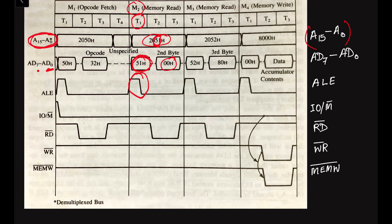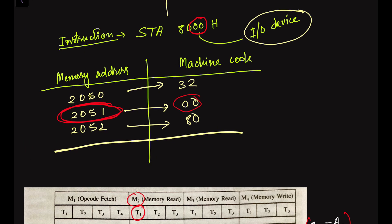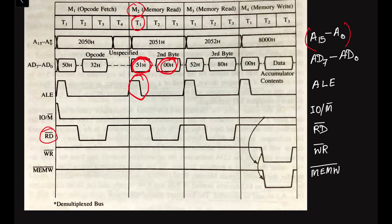During the second T state the data 00H from address 2051 is loaded onto the data bus. The read bar signal, which is active low, goes low during this period to indicate a read operation. The write bar signal remains high throughout this second machine cycle since it is a read, not a write operation.